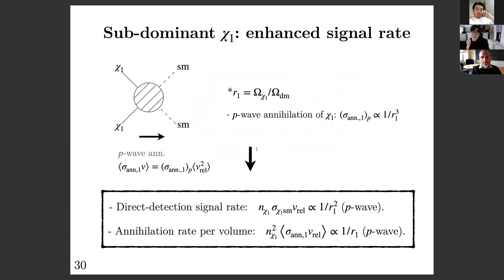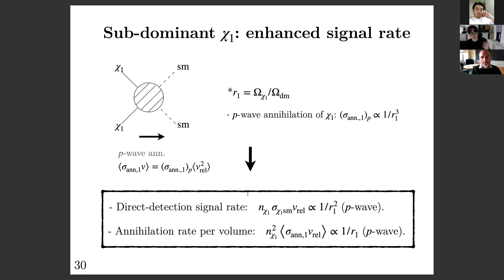This has interesting consequences for detection signals. For p-wave annihilation of χ₁, the required annihilation cross section scales as 1/r₁³ in the assisted regime, implying it is actually easier to detect subdominant χ₁. For example, the direct detection signal rate is proportional to number density times scattering cross section times velocity, and assuming a heavy mediator limit, the direct detection signal rate is enhanced for smaller abundance fraction. The same holds for indirect detection experiments, where the important quantity is the volumetric annihilation rate.